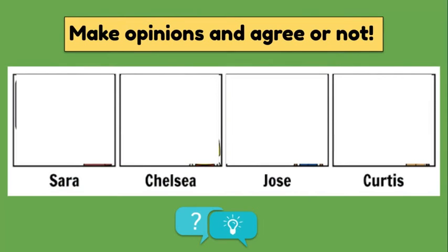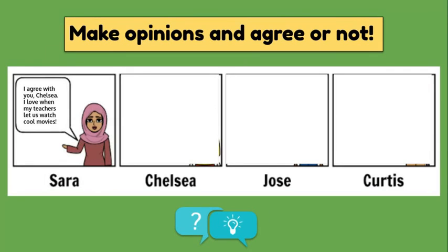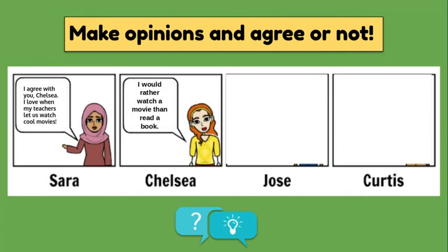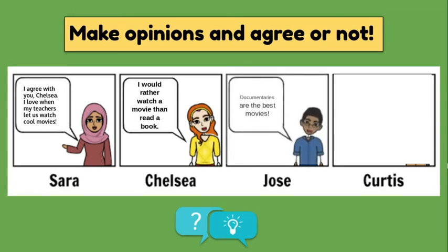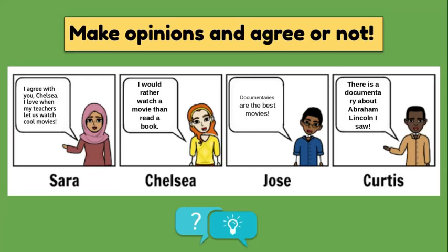Now our characters are going to make opinions. They can agree with someone or they don't have to agree — they can have a disagreement and that's okay. We've already learned about making opinions and facts in our class, so this is just an add-on to it. Sarah says she agrees with Chelsea and loves when teachers let them watch cool movies. Chelsea says she would rather watch a movie than read a book. Jose says documentaries are the best movies — that's an opinion. Curtis adds that there is a documentary about Abraham Lincoln that he saw.